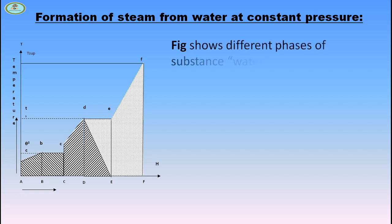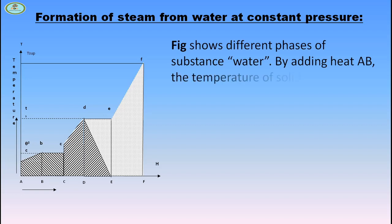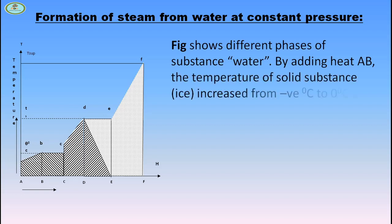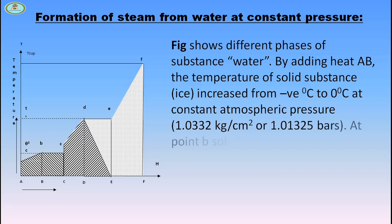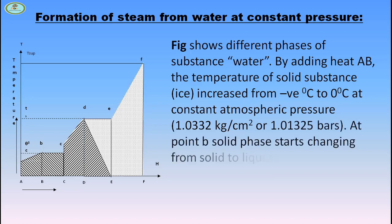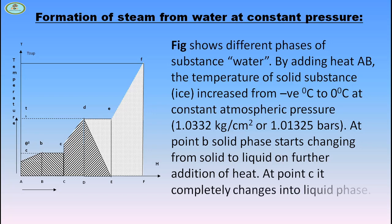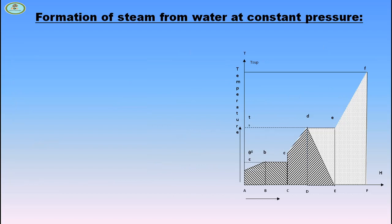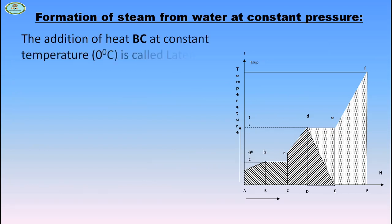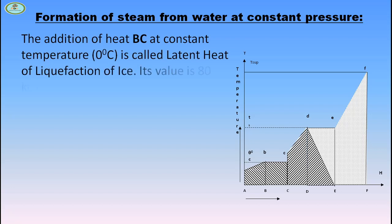The figure shows different phases of water. By adding heat from point A to B, the temperature of the solid substance increases from minus 0 degrees to 0 degrees Celsius at constant atmospheric pressure of 1.01325 bar. At point B, the solid phase starts changing from solid to liquid. On further addition of heat, at point C, it completely changes into liquid phase.